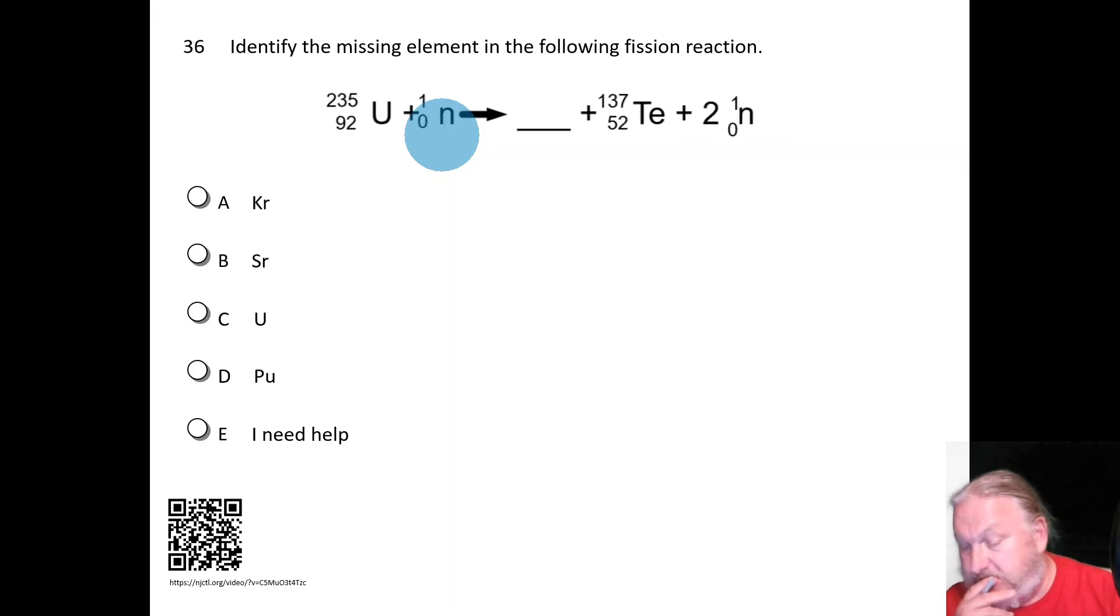I'll give you a chance to work this one. So in this fusion process of uranium, uranium-235 is bombarded with a neutron. Of course, it's going to have an intermediate state of uranium-236. But then, what other element is formed? Take a minute, break the video, and see what you come up with.